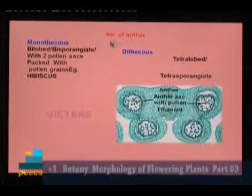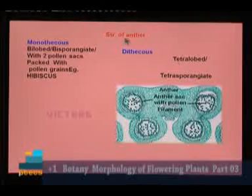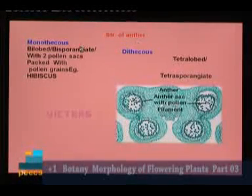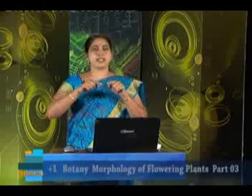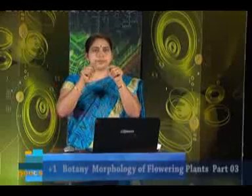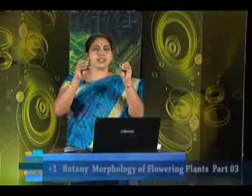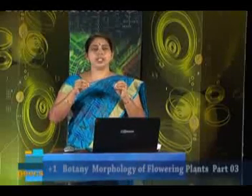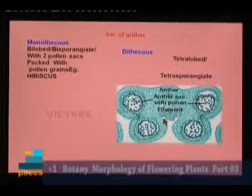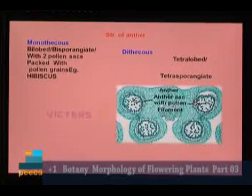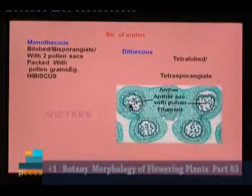What about the structure of the anther? When we take the cross-section of the anther, we can see its anatomy. There are 2 types of anthers: monothecous and dithecous. In monothecous, only 2 sporangia — bisporangiate — with 2 pollen sacs containing pollen grains. Tetrasporangiate means 4 anther lobes or microsporangia. Within these microsporangia, the microspores are produced.